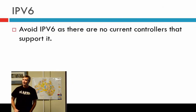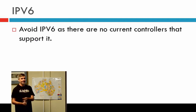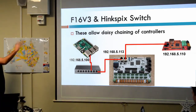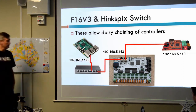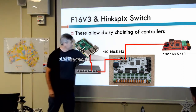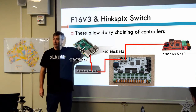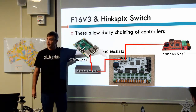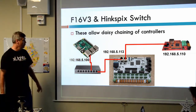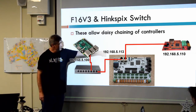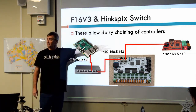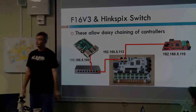IPv6 — avoid it. None of the current range of controllers support it, and none of the current sequencers output it. You can use it on your home network, but it's not particularly useful for lighting control. New this year, the HinksPix, the F16v3, and the F4v3 are starting to introduce daisy-chaining. This allows your Pi and switch to connect to a device with one IP address, which then daisy-chains to a second device. That second device doesn't have to be a V3 or HinksPix — it could be anything. The upstream device passes all packets, whether addressed to 113 or 110, down the same wire.